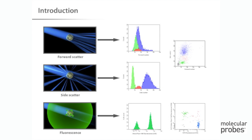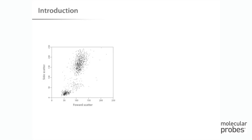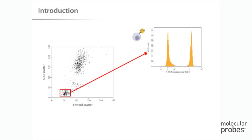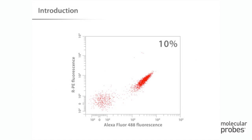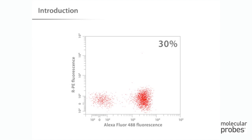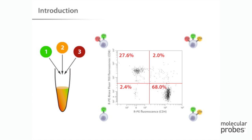This means the data file for each cell contains information on every collected parameter. In this tutorial, we will look at how data is collected and plotted, and how gates can be used to analyze subpopulations within the sample. We will also show you how to correct datasets when fluorophores have overlapping signals, and finally walk through the basic steps required to run and analyze a typical three-color experiment.